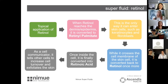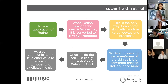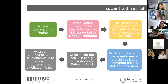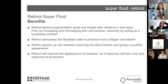When the retinol reaches the dermis or epidermis, it is converted to retinol palmitate — the only way it can enter the cells and fibroblasts. When it crosses the cell membrane it converts back to retinol, and once inside the skin it converts into retinoic acid. It then acts as a cell communicator, telling other cells to increase cell turnover and improve exfoliation of the skin.